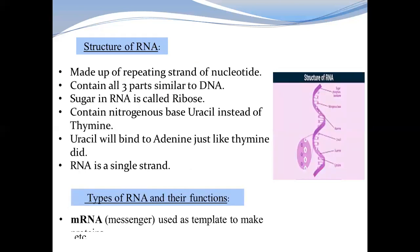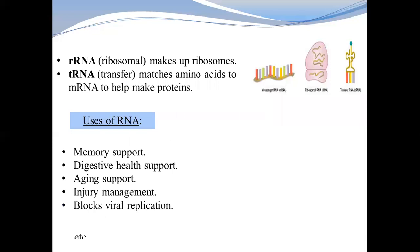RNA is made up of a repeated nucleotide strand, similar to DNA. In RNA, there are also three parts just like DNA. However, in RNA the sugar is called ribose. RNA uses uracil in place of thymine. There is a single strand, and the types of RNA include messenger RNA, which was originally used as a template for protein synthesis.